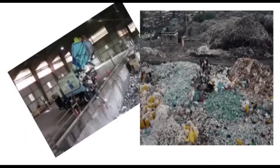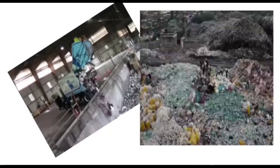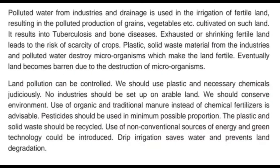Now let us see what are the harmful effects of land pollution. Polluted water from industries and drainage is used for irrigation of fertile land, resulting in polluted production of grains, vegetables, etc. Crops cultivated on such land lead to tuberculosis and bone diseases. Exhausted or shrinking fertile land leads to the risk of scarcity of crops. Plastic, solid waste from industries, and polluted water destroy microorganisms which make land fertile. Eventually, land becomes barren due to the destruction of these microorganisms.